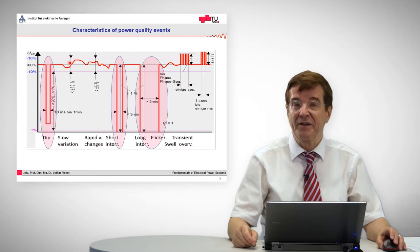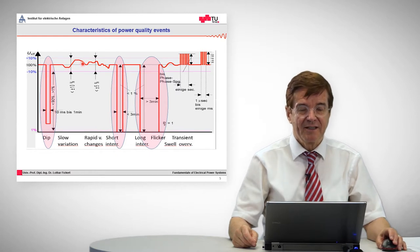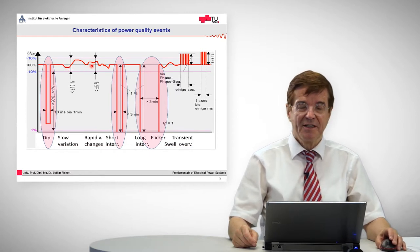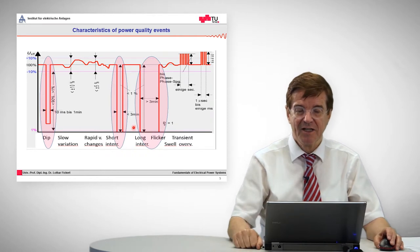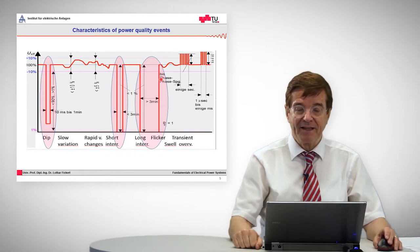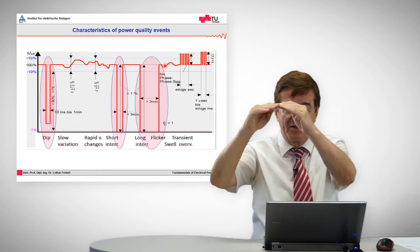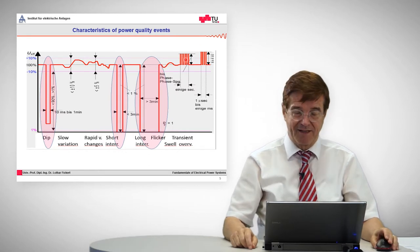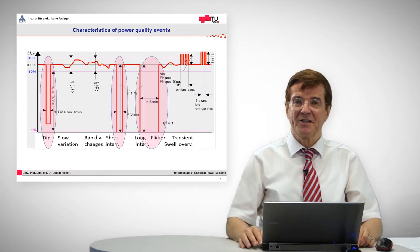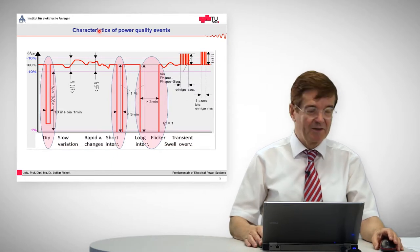Another feature is the fluctuation of voltage, where we speak about slow variation and rapid changes. There are short interruptions where the voltage is even below 1%, which is defined as the limit for interruptions. We also have longer interruptions. Then there may be something like flicker, which is periodic variation of the voltage. There may also be transient overvoltages, swells and sags. These are the features where the voltage is not perfect, and these are the characteristics of power quality events.